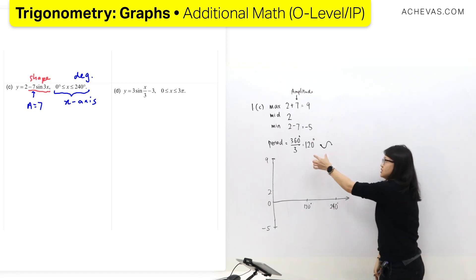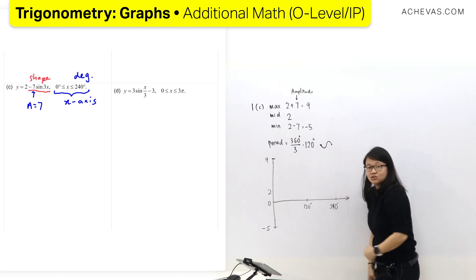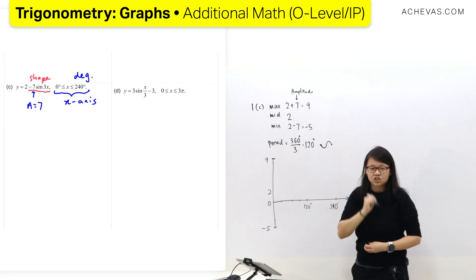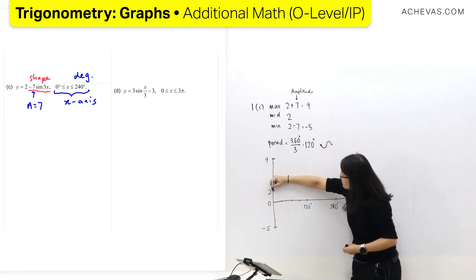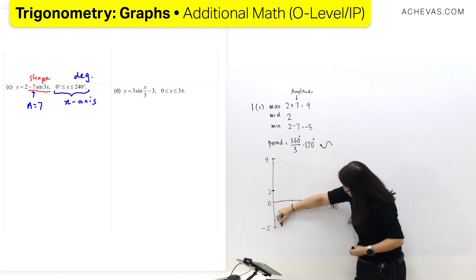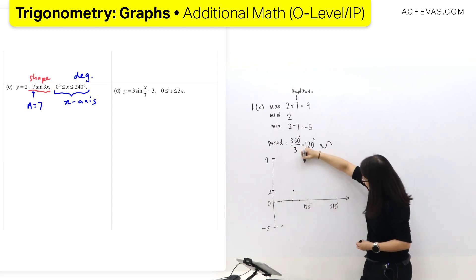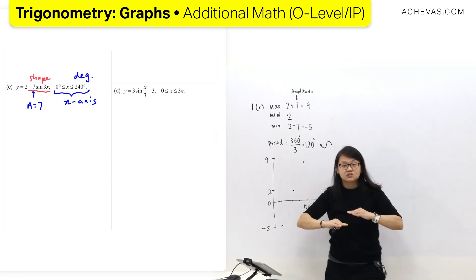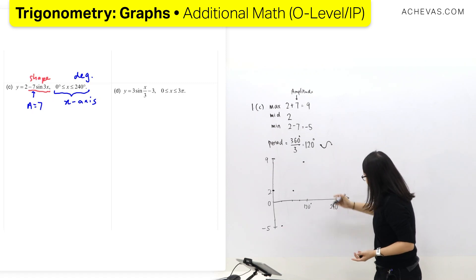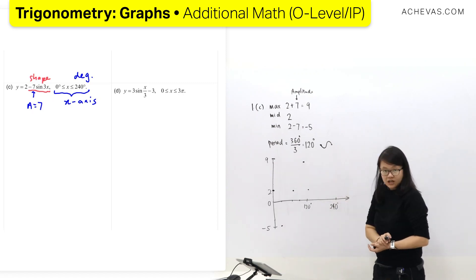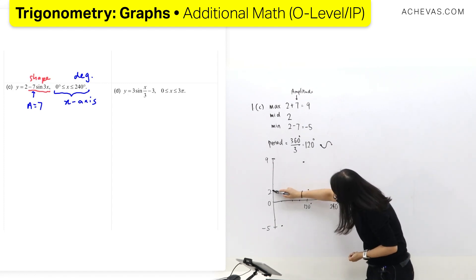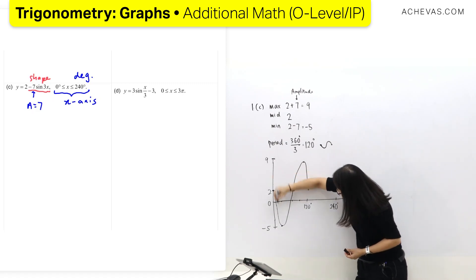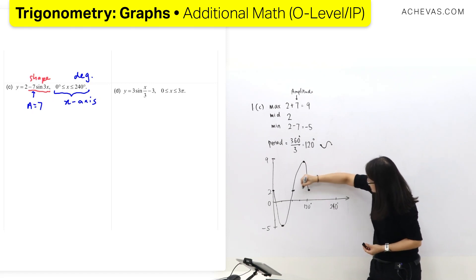I need to draw this shape within 120 degrees. I will split the period into four. I like to plot the dotted lines first. My center line is at two — remember it's two. I need to draw the negative sine shape, so I go down to the minimum, come back to two, go up to the maximum, then come back to two. I'll connect the dotted lines and it will look like a very tall sine graph.